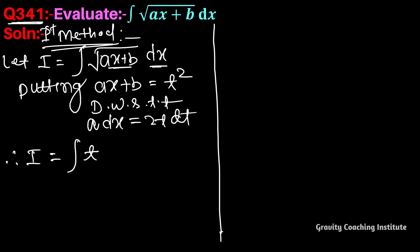So dx equals 2t/a dt. Now we substitute dx with 2t/a dt in the integral.